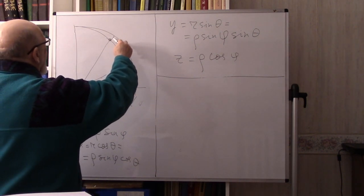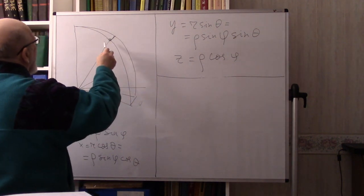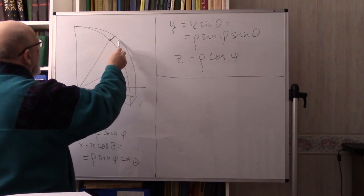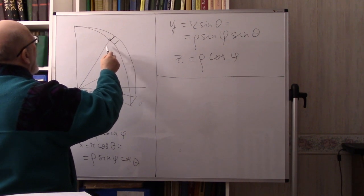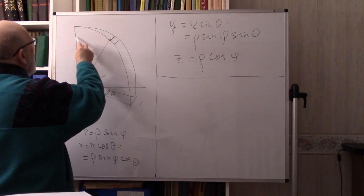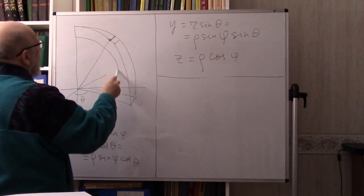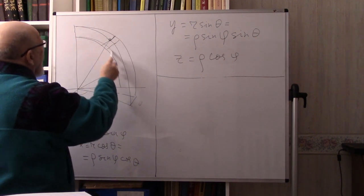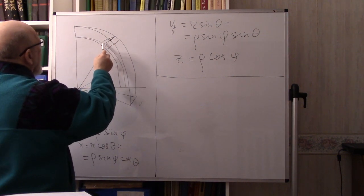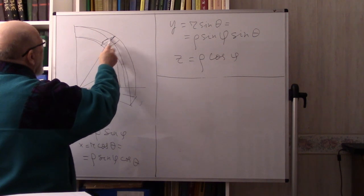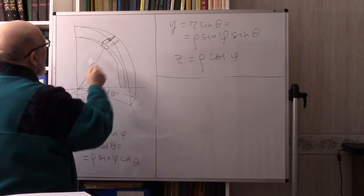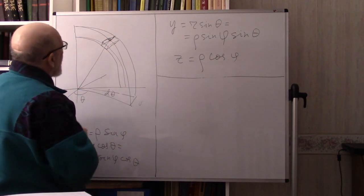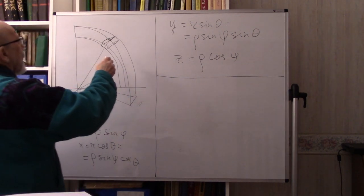Correspondingly there is some displacement. If φ changes to φ + dφ, we get another arc here. And if ρ changes to ρ + dρ, it goes out further. So this volume element is this small brick, and we need to find its dimensions.